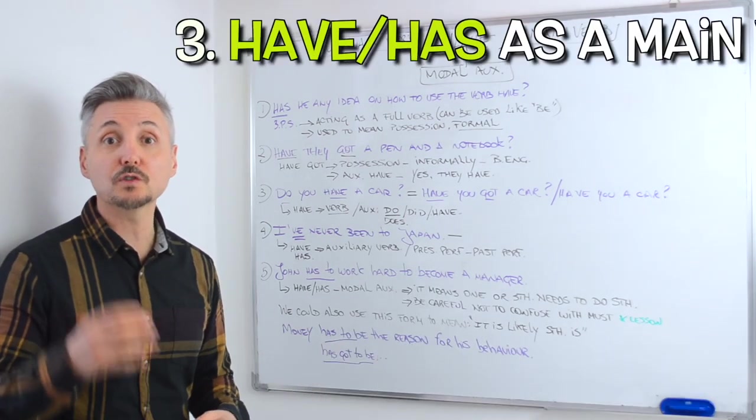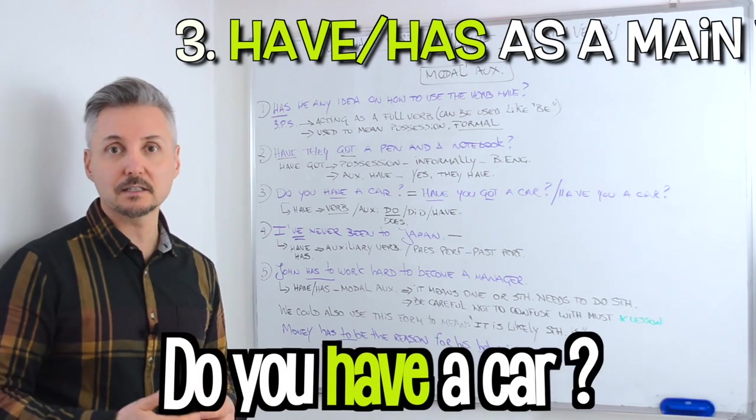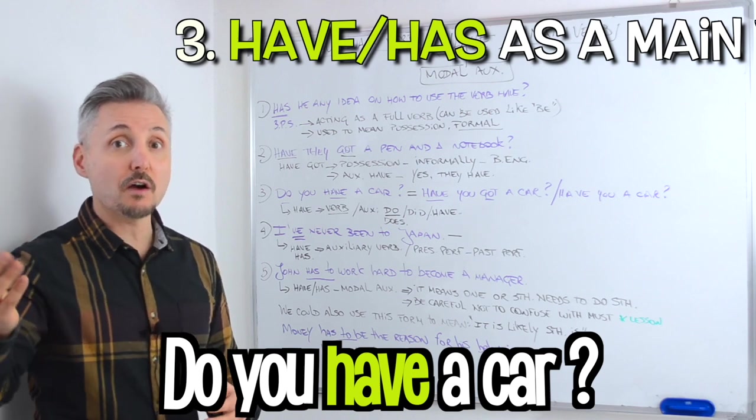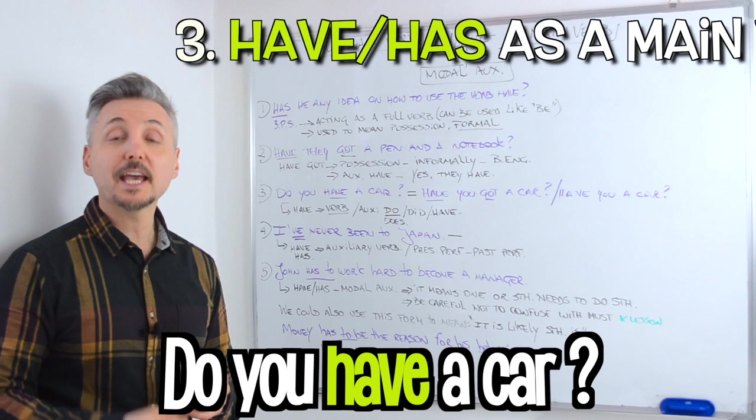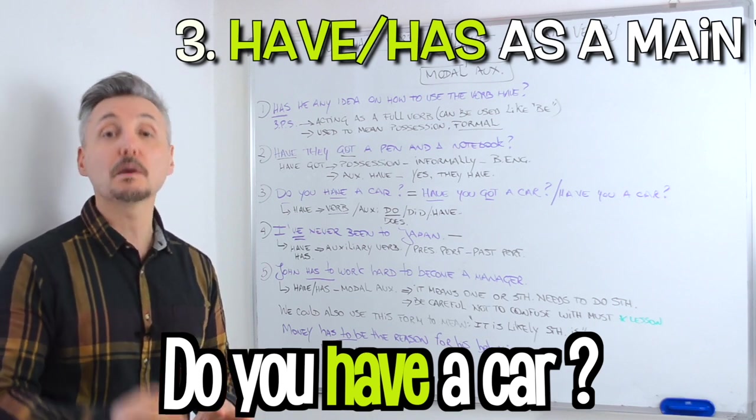The third example is the most used. So, do you have a car in this case? Does he have a car? Or, did he have a car when he was younger? Notice the auxiliary verb can change, but the main verb have stays the same in a question.